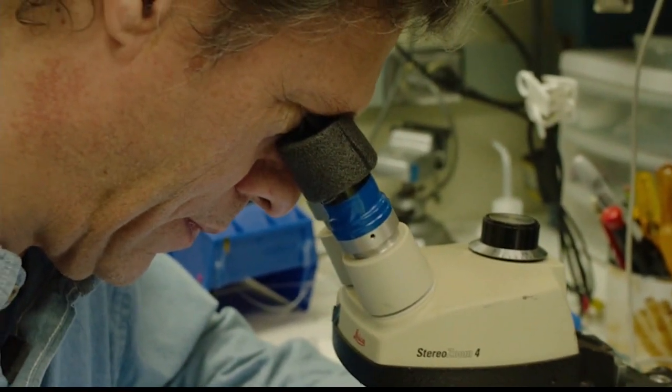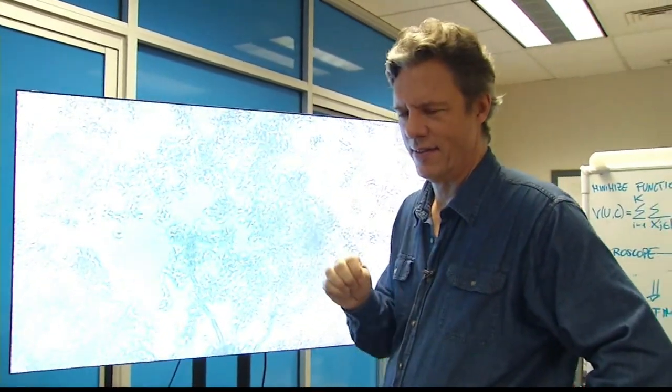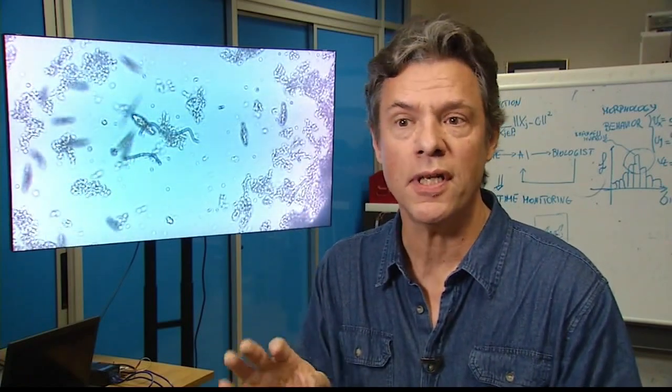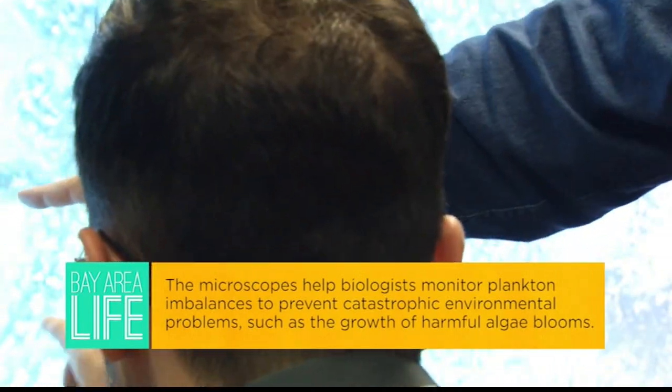And usually you'd have to have a biologist looking at the results of these, but if you put thousands of them out, you can't have thousands of biologists hanging out with these microscopes. So the AI is basically like a little biologist inside the microscope looking at the plankton. And they're looking for anomalies when the shape changes or the behavior changes. We want to alert scientists because that usually indicates there's a problem about to happen.